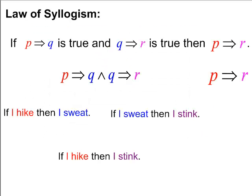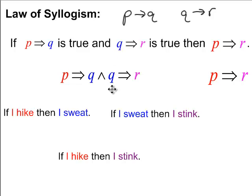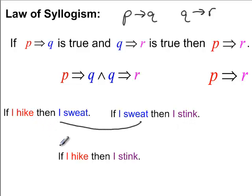Law of Syllogism. It's pretty straightforward: if P implies Q and Q implies R, then forget about the Q — we can go straight from P to R. For example: P is 'I hike,' Q is 'I sweat,' and R is 'I stink.' I know, a little gross, but it's a good example. If I hike, then I sweat. If I sweat, then I stink. Therefore, if I hike, then directly I stink. Done.